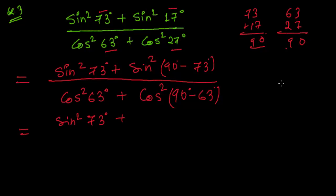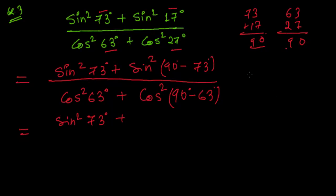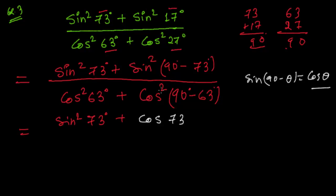Now we apply the formula sin(90° − θ) = cos θ, which we learned previously. So sin(90° − 73°) = cos 73°. Since it is squared, sin²(90° − 73°) = cos²73°. Therefore the numerator becomes sin²73° + cos²73°.